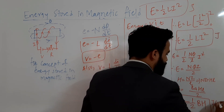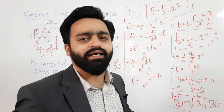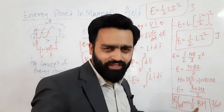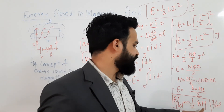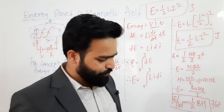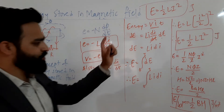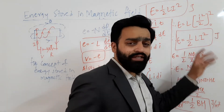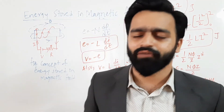You can get two more equations for energy stored per unit volume: by substituting B = μH, you get one equation, and by substituting H = B/μ, you get another. I hope you have understood the derivation of energy stored in a magnetic field and energy stored per unit volume. Thank you for watching this video completely — I love you all.